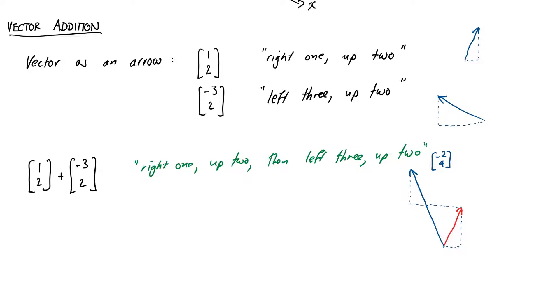Pictorially, you can do this by taking your two arrows and lining them up so that the second one starts where the first one ends. The overall vector starting at the tail of the first and ending at the head of the second is our vector sum. So we can write our sum as follows. 1, 2 plus negative 3, 2 equals negative 2, 4.